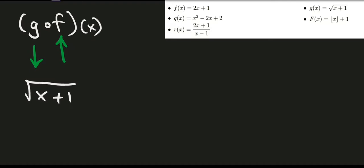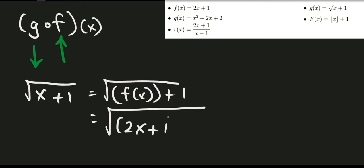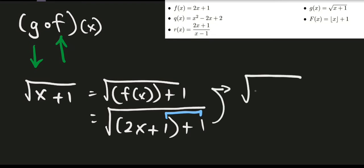Since g(x) = √(x + 1) is our first function, we have the variable x, so we need to plug in the values of f into this variable. The contents of f(x) is 2x + 1, so we get √(f(x) + 1) = √(2x + 1 + 1). Just combine like terms: 1 + 1 = 2, so our final answer is √(2x + 2).